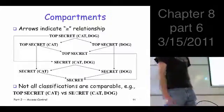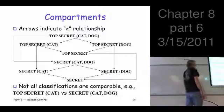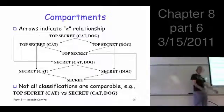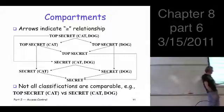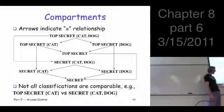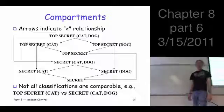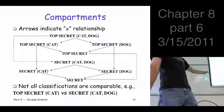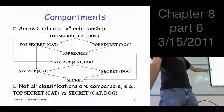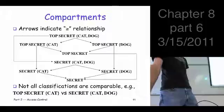That's a design decision — you could set it up some other way, but this is the way it actually works. For example, even if you have top secret cat, you can't see something that's restricted to both compartments like cat-dog. In a sense, this is the most restrictive way to organize it.